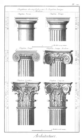Narthex: an enclosed passage between the main entrance and the nave of a church. Nave: the main body of a church where the congregants are usually seated; it provides the central approach to the high altar.